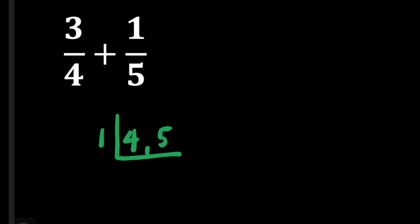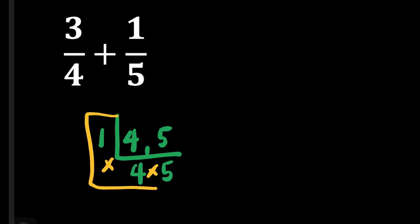So, 4 divided by 1 is equal to 4, and 5 divided by 1 is equal to 5. Our LCD is the product of the numbers inside the box — 1 times 4 times 5 — that is 20. So, our LCD for these two denominators is 20.